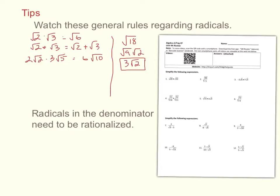The last general property is dividing radicals. You can divide radicals if one radical is a factor of another. For instance, root ten divided by root two — you can divide these just like multiplying — gives root five. But if you had root ten divided by root three, those aren't divisible, so we have to do something different: that leads to rationalizing radicals in the denominator.